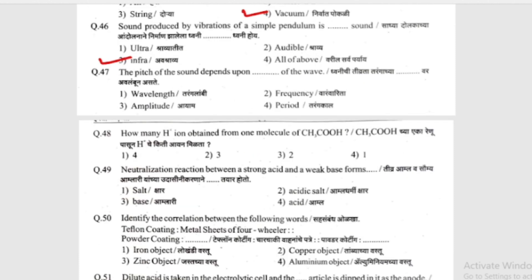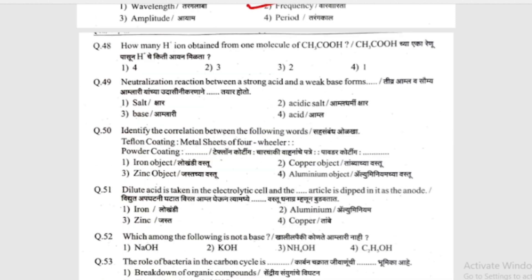The pitch of the sound depends upon what property of the wave? (Dhvanicha tivrata taranga cha timba timba war avulamun hoi.) Options: wavelength, amplitude, frequency, or time period. The answer is frequency — pitch depends on the frequency of the wave.